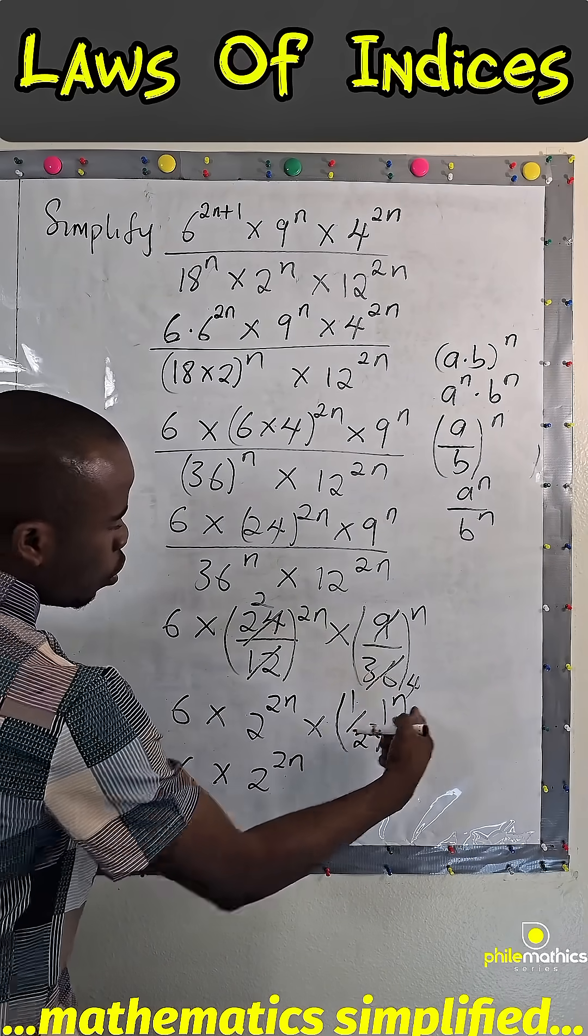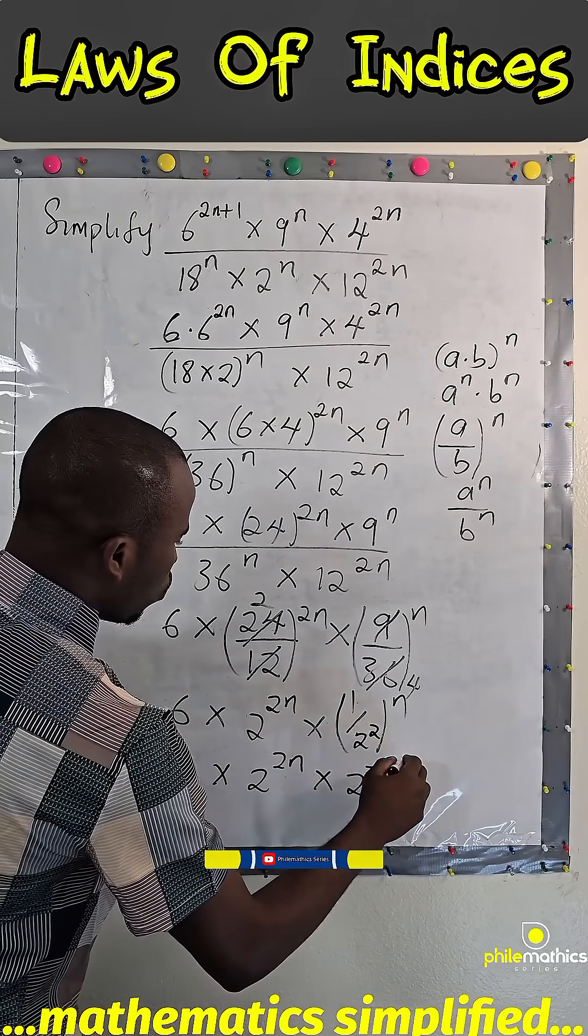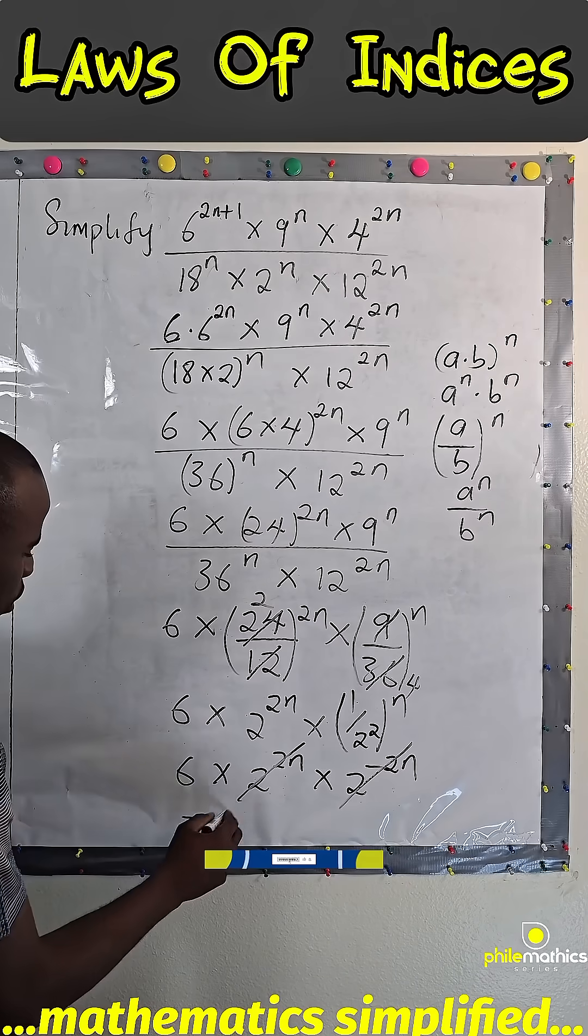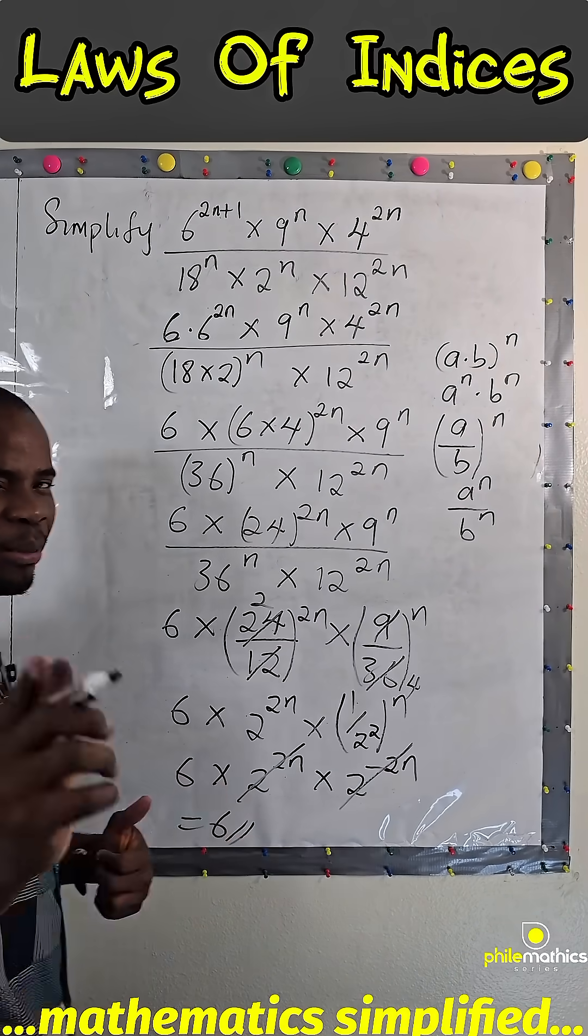product rule, multiply the power, so this is times 2 raised to power minus 2n. This can go with this, is 1. So we are left with 6, which is the answer. So we'll meet again, keep enjoying math, bye!